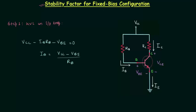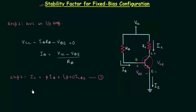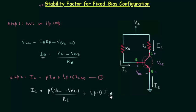From this equation, the base current IB is equal to VCC minus VBE divided by resistance RB. This is step number one. In step number two we calculate the collector current IC using the equation IC = β·IB + (β+1)·ICBO. So IC is equal to β times (VCC minus VBE) divided by RB, plus (β+1) times ICBO. This is equation number two.